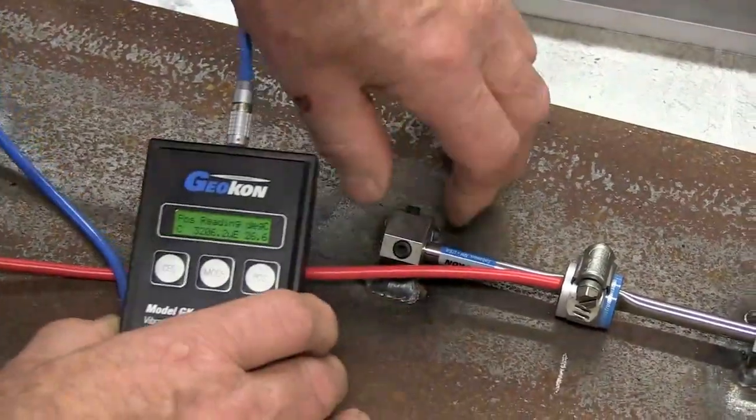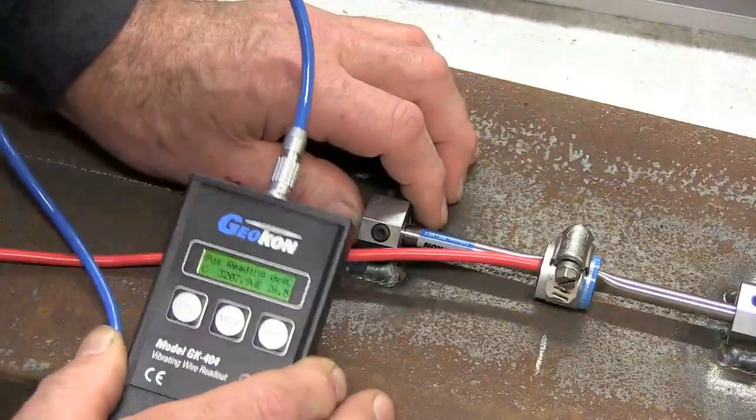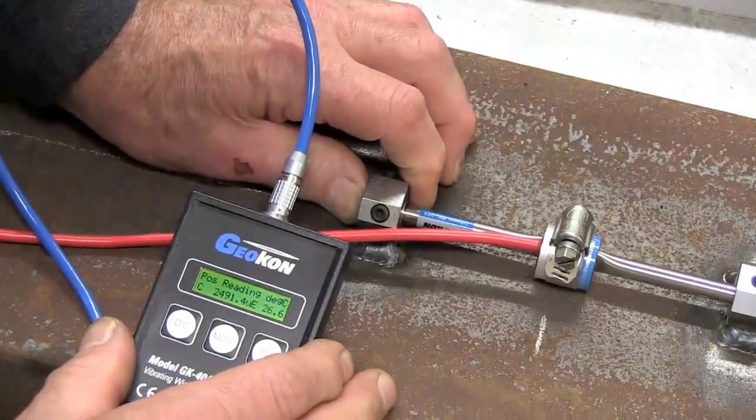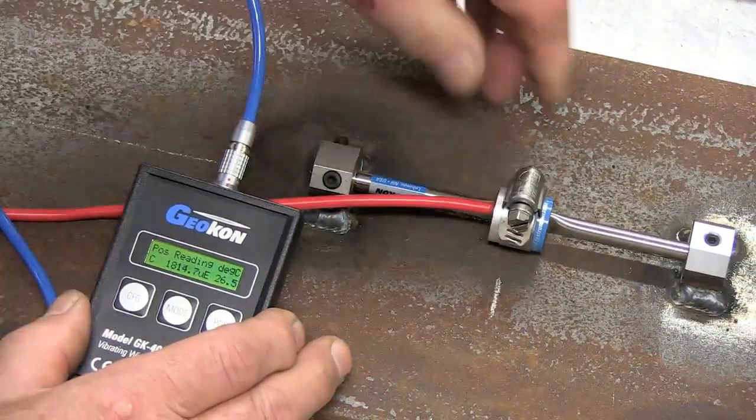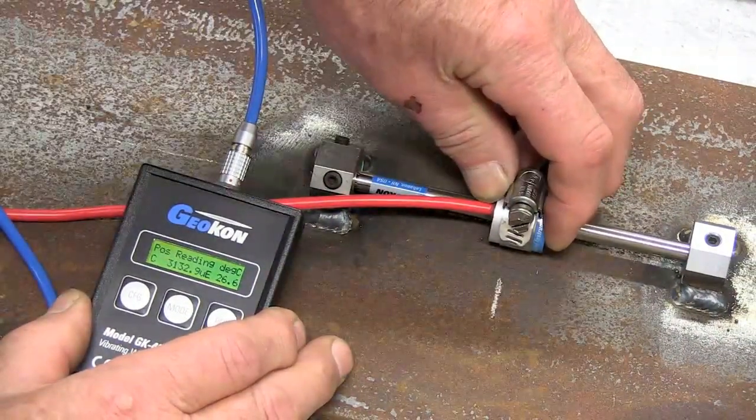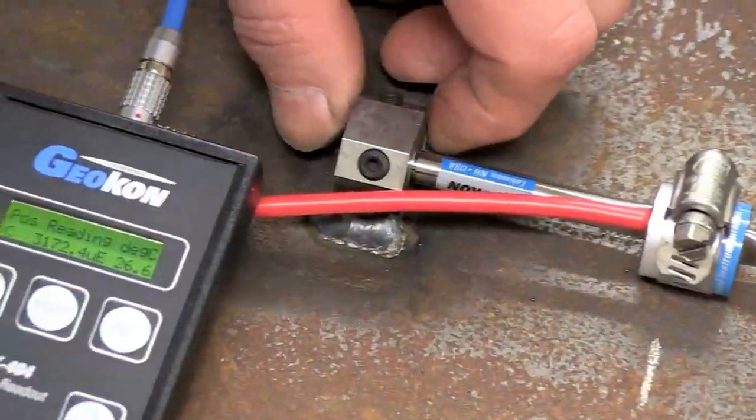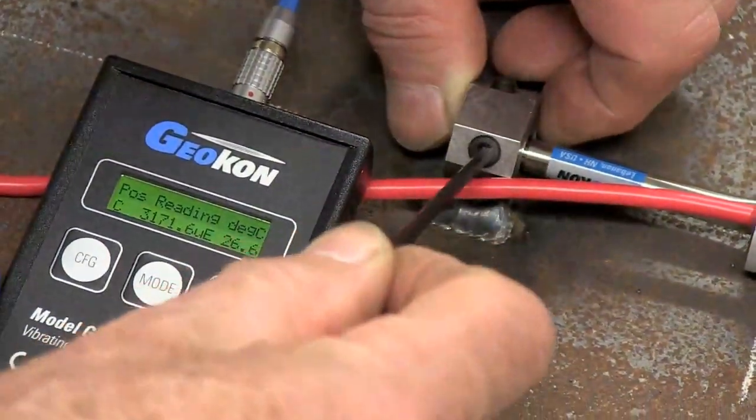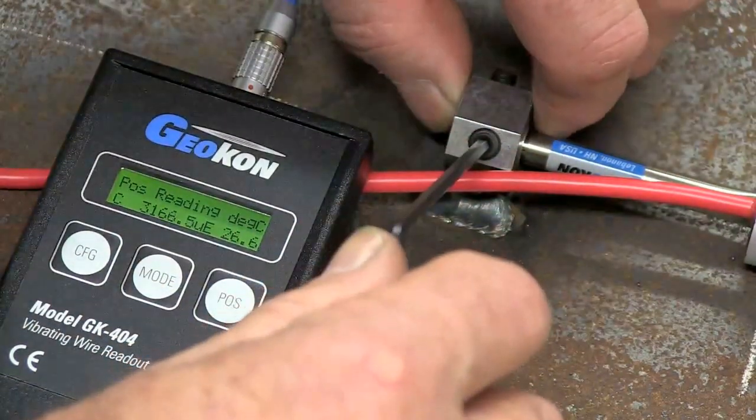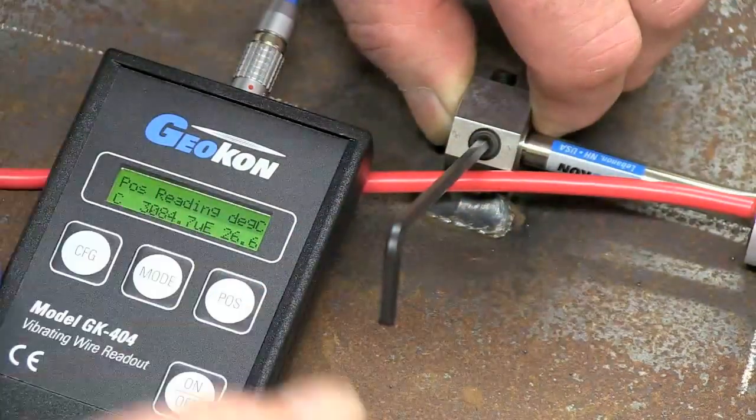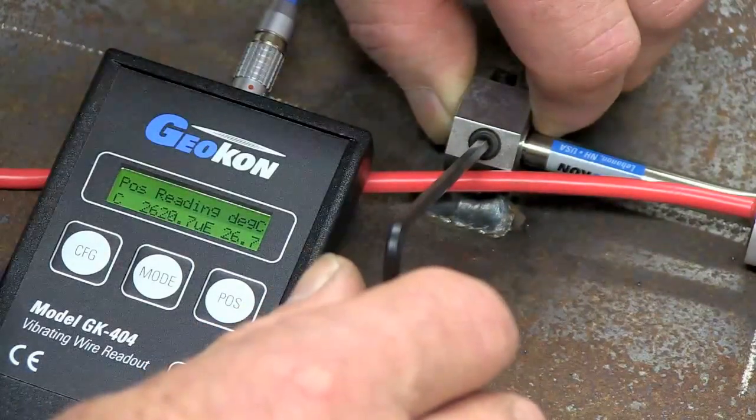The way we do that is we put a force either through the end of this gauge, if you can see the reading changing, or by pushing or pulling on this coil. In this case, I think I'm going to use the end of the gauge. Then, you tighten, alternately, these set screws. The first thing you do is try to get a steady reading of 2,500 microstrain.